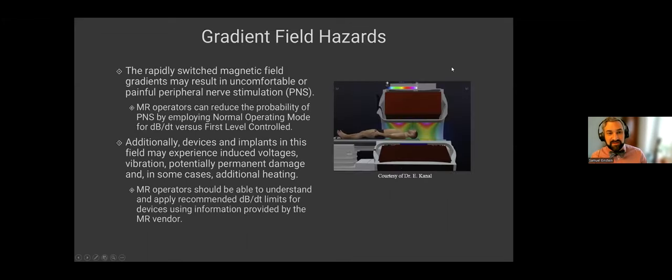Another potential issue with these gradient fields is that the rapidly switched magnetic field gradients can result in uncomfortable or painful peripheral nerve stimulation. So MR operators can reduce the probability of PNS by using normal operating mode for DBDT. But I don't know. I think that's rarely necessary. With PNS, it's uncomfortable, but there's no permanent damage. I think it's more important just to be aware of the potential for PNS. So again, this occurs when we have rapidly switching gradients. Again, I'm thinking EPI. So if a patient is complaining of something painful during EPI, especially in their fingertips, it's probably less likely to be a burn or thermal damage, which we'll talk about next, and more likely to be this peripheral nerve stimulation. And again, no permanent damage generally, just kind of usually tingling.